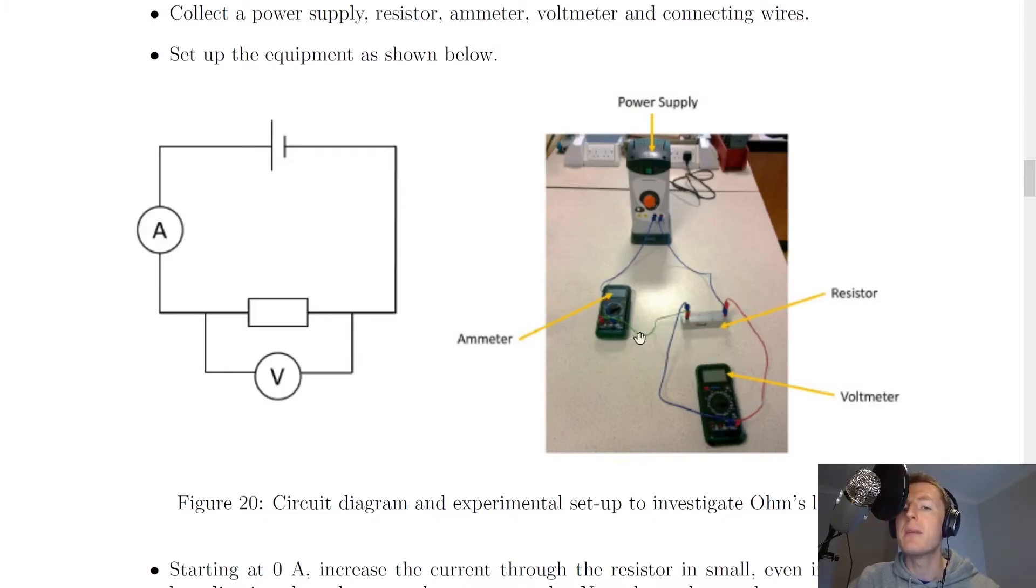So you've got your power supply, your ammeter and resistor in series, and then a voltmeter in parallel with the resistor. And this will allow us to measure the current passing through the resistor and the voltage across the resistor.